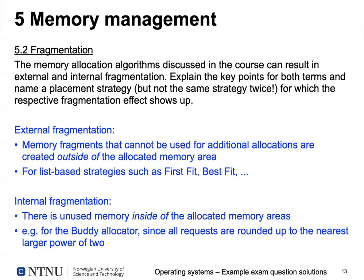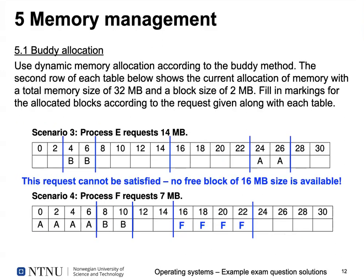A student asked about scenario three: if you add the middle blocks together it's still a power of two — why isn't that a legal solution? Because a block of a size that is a power of two, like 16 megabytes, must always start at an address evenly divisible by that size. So there are only two places to put a 16-megabyte block: starting at 0 or starting at 16. You cannot use the blocks in between with the buddy allocator.